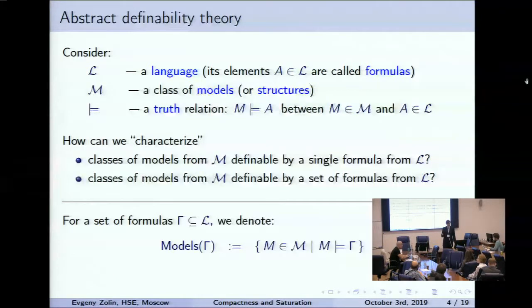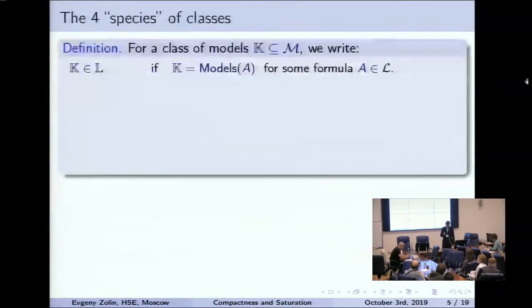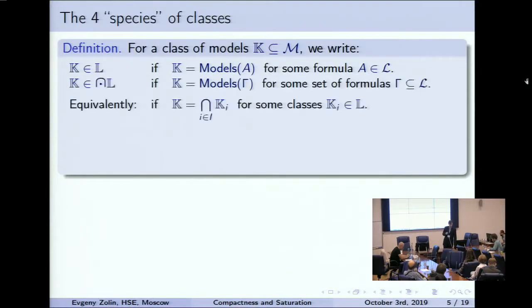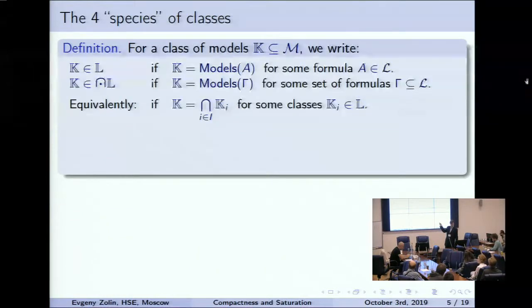To define these extra options, I need this notation: models of a set of formulas gamma is the class of all models in which gamma is true. I will say that K is finitely axiomatizable if it is exactly the class of models of some single formula of our language. I say K is axiomatizable — using the intersection symbol — if it is the class of models of some set of formulas, or equivalently, if it is the intersection of some finitely axiomatizable classes.